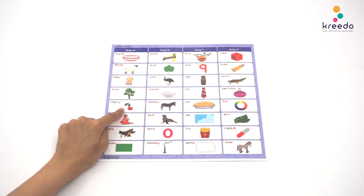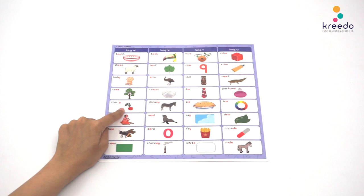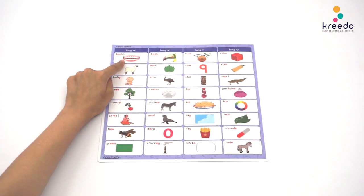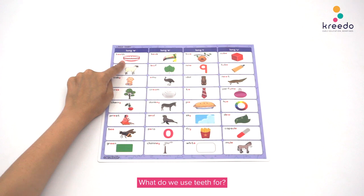Point to the cherry and ask what is this? Cherry. Here are a few questions to ask: What is cherry? How does a cherry taste? Point to the teeth and ask what is this? Teeth. Here are a few questions to ask: What do we use teeth for? What color are our teeth?